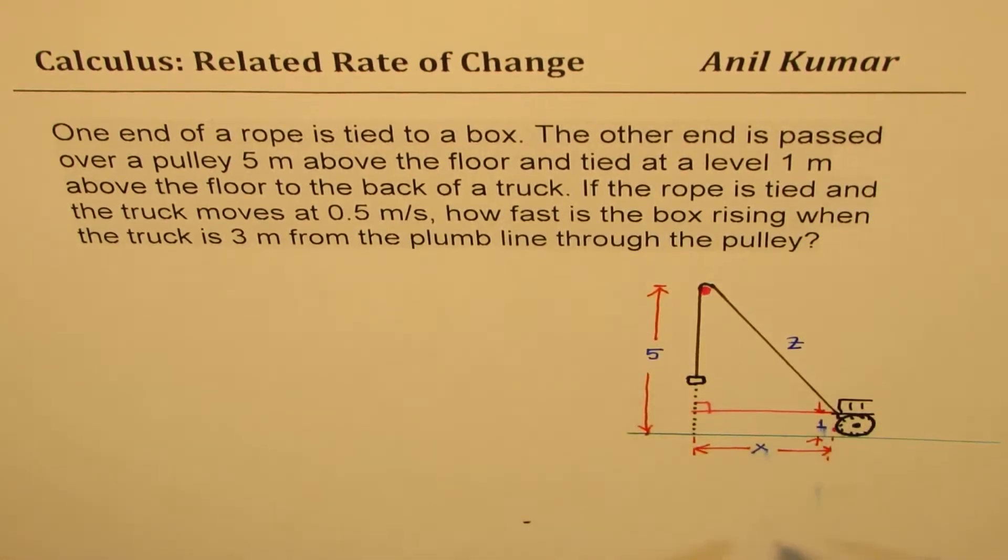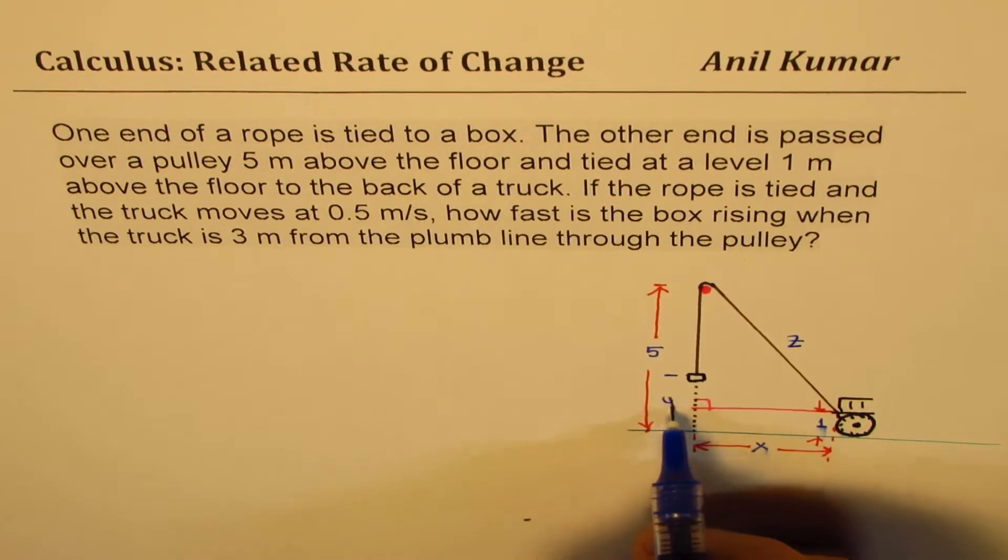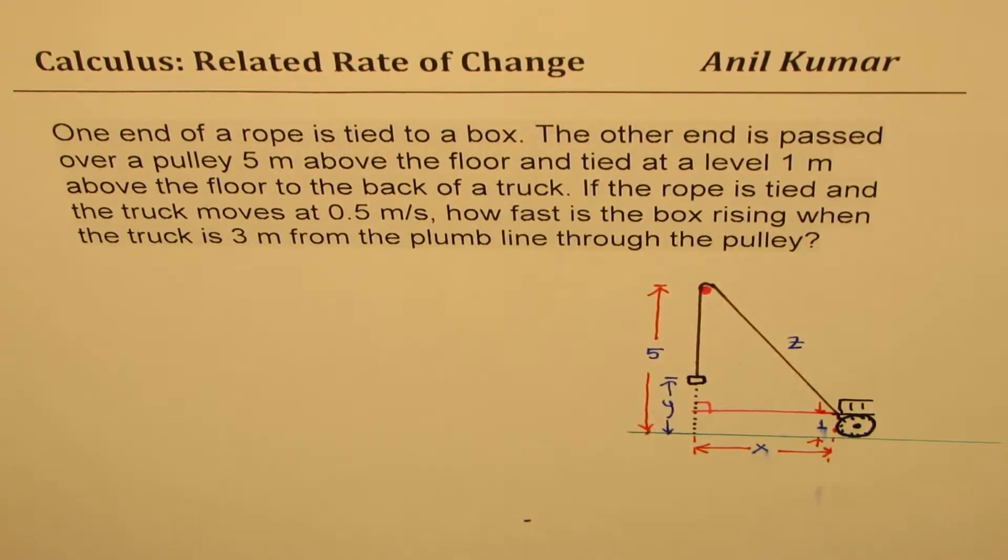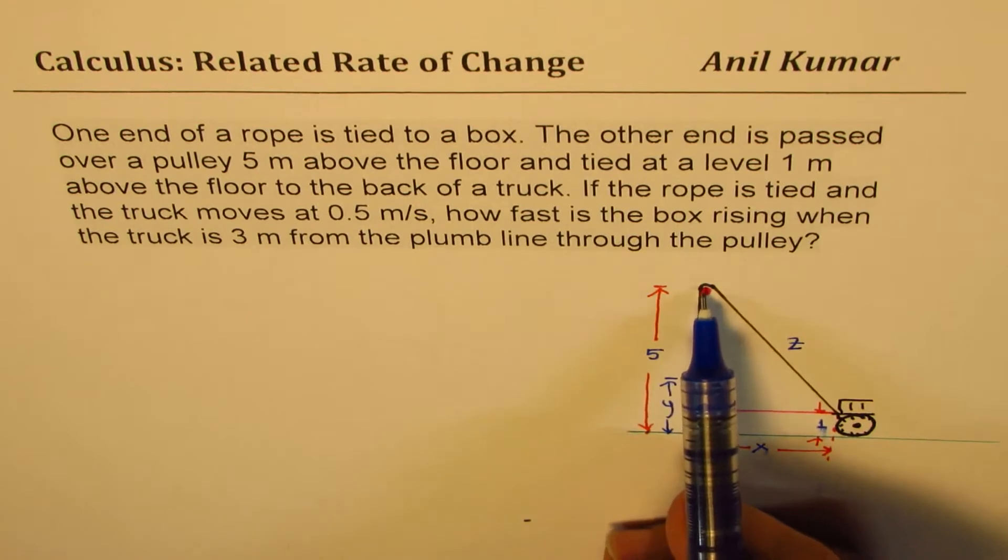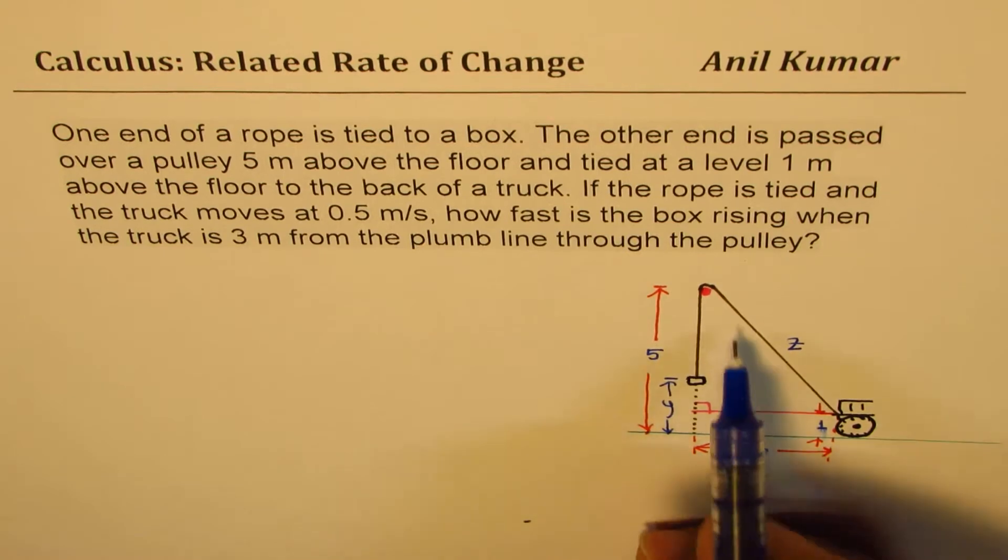So let's say this part of the rope is Z and at any time, let the height of this box be Y. You will notice that this pulley is 5 meters above the ground, this is 1, and therefore this height...